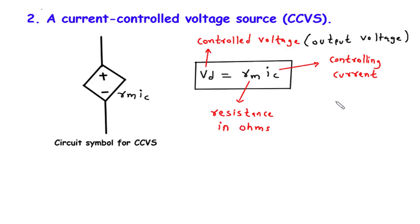To summarize, a CCVS is an electronic component that produces a voltage across its terminals proportional to the controlling current in another part of the circuit. By using the CCVS equation, VD equals RM times IC, we can determine the relationship between the controlled voltage and the controlling current.